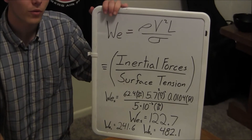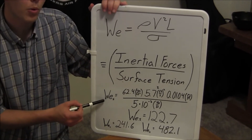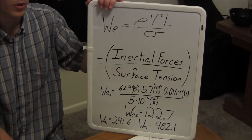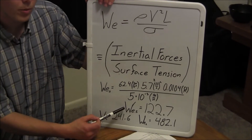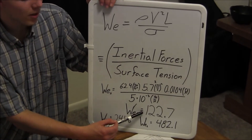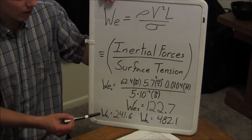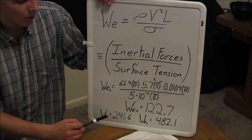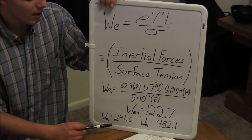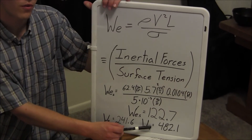In this experiment we will be dropping a water droplet from three different heights. First at 0.5 feet — six inches in imperial units — giving a Weber number of 122.7. Then dropping from double the height, we get a Weber number of 241.6. Doubling again, we get a Weber number of 482.1.